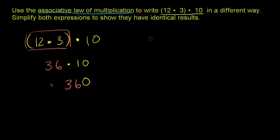So let me write it down again. If we were to do 12 times 3 times 10, if we just wrote it like this without parentheses, if we just went left to right, that would essentially be exactly what we just did here on the left. But the associative law of multiplication says, you know what, we can multiply the 3 times 10 first, and then multiply the 12.